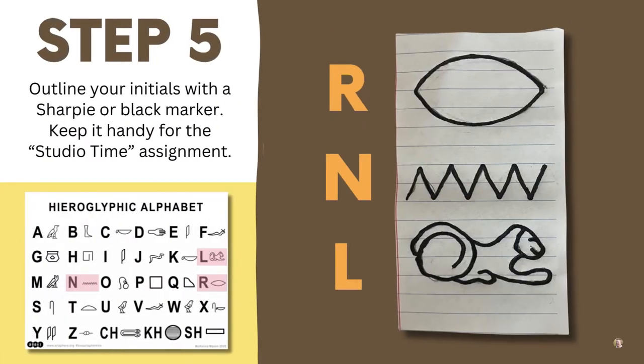Step five is that you're going to outline your pencil with a sharpie. You can see here my initials again are R, N, L, and I went over it with the sharpie. This will make it easier to use when you go to make your clay cartouche.